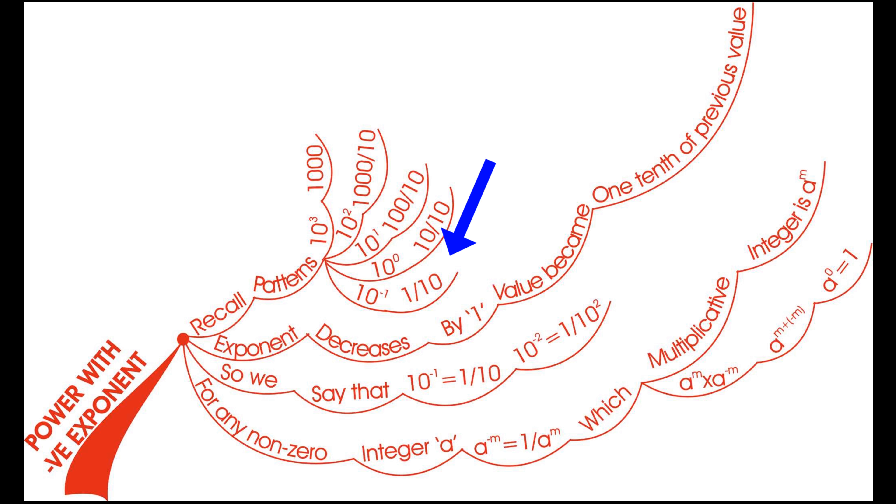10 to the power of minus 1 is equals to 1 by 10. As the exponents decrease by 1, the value becomes 1 tenth of the previous value.